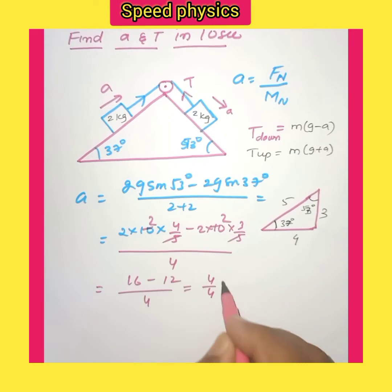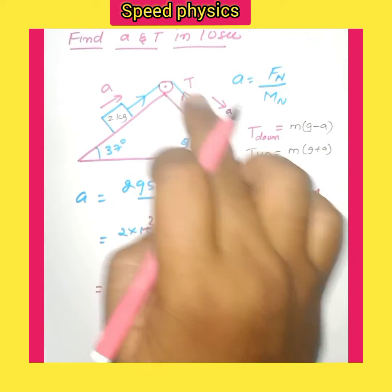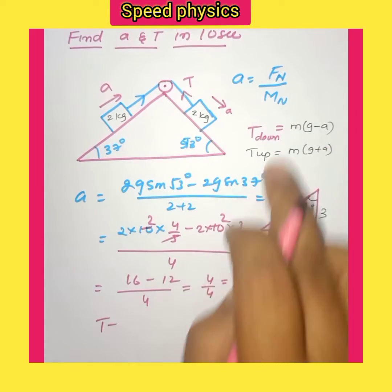Finally we get 4/4 which equals 1 meter per second squared as the acceleration. To find the tension, consider the block coming downwards as m times (g minus a).